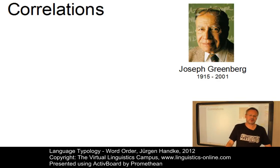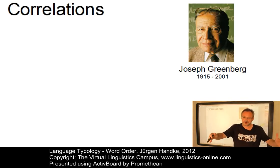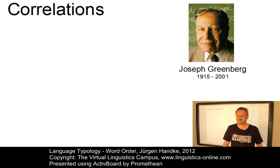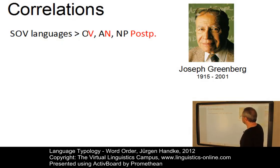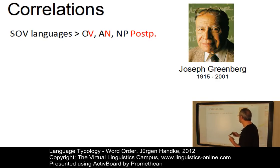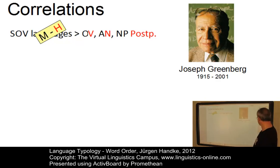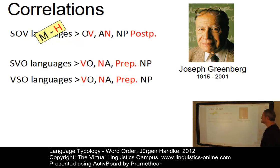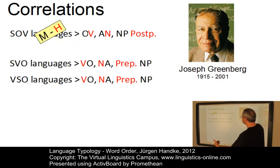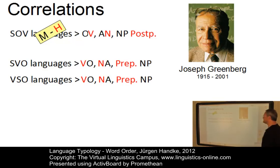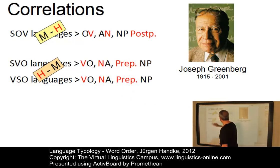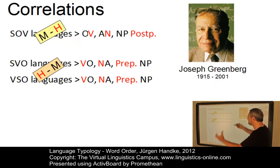The typologist Joseph Greenberg found out that there are typical correlations between the basic word order — SVO, SOV, VSO, etc. — and these head-modifier patterns. By investigating a large number of languages, he found that SOV languages typically have modifier-head patterns. Whereas languages where the verb comes first, or SVO languages, typically have head-modifier patterns. So these are the ideal correlations between the basic word order and the organization of heads and modifiers.